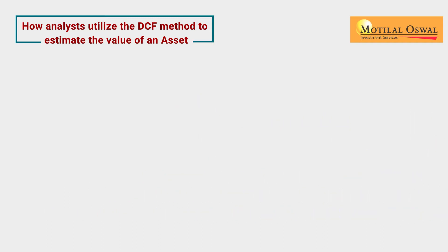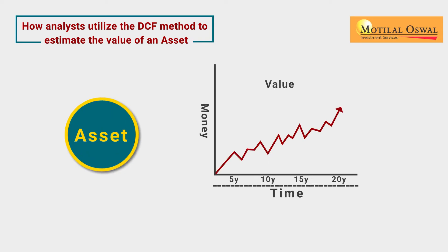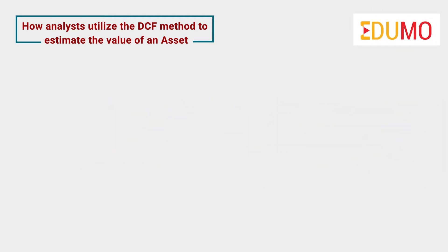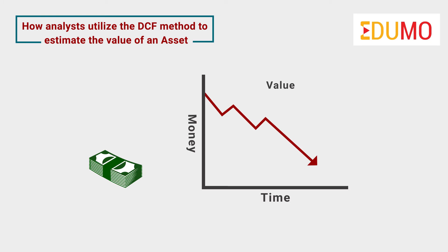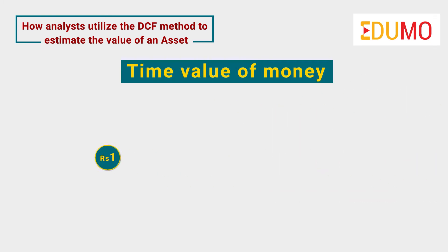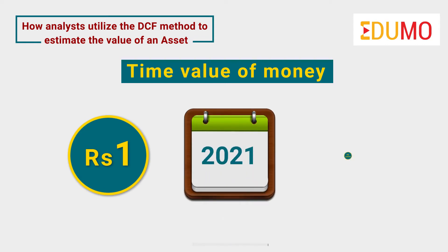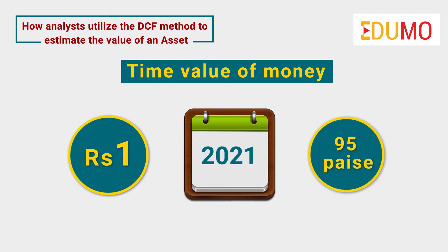The main purpose of this method is to adjust all future cash flows based on the theory of time value of money. Under this theory, it is assumed that the value of money always depreciates over time. Time value of money assumes that the value of one rupee today will not be the same one year from now.